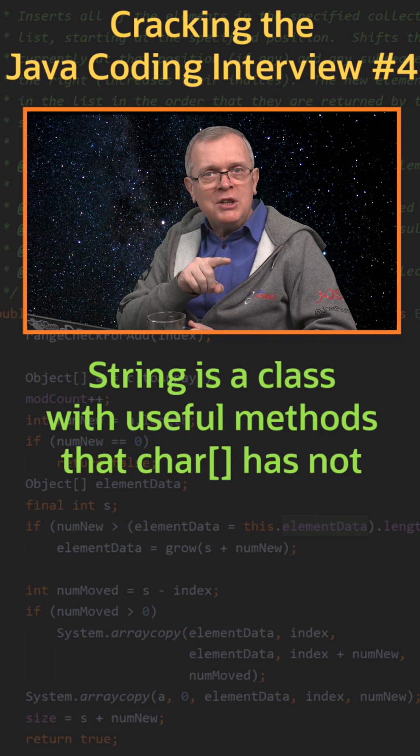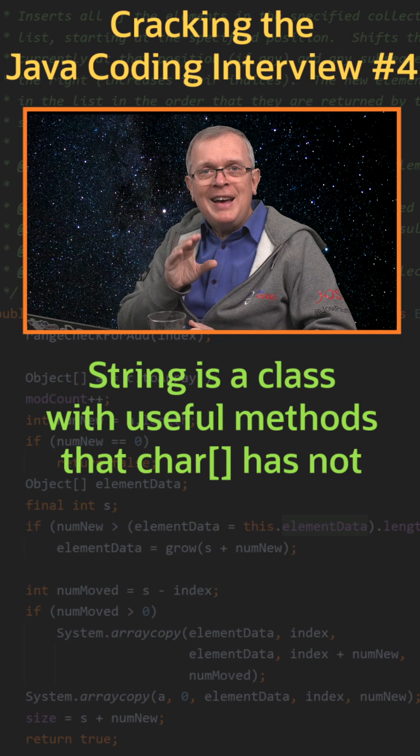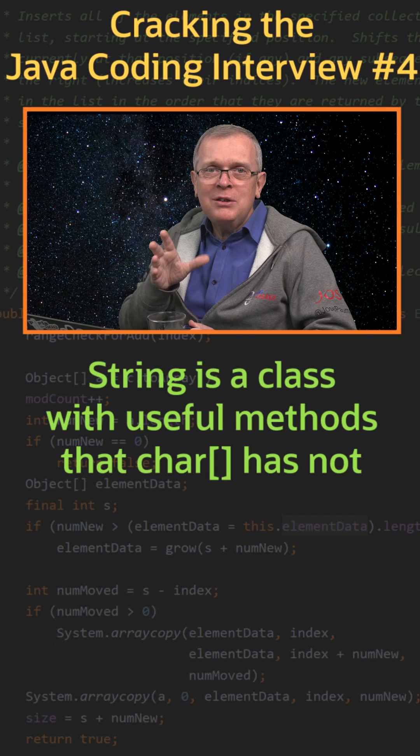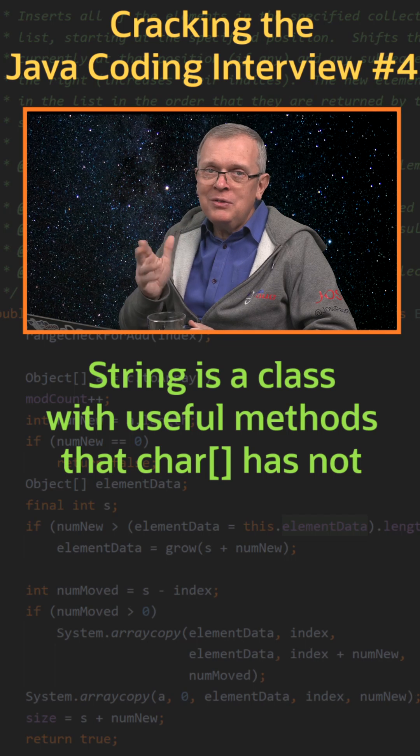Short answer, a string is an object with many useful methods. An array only has methods from object and they are not very useful.